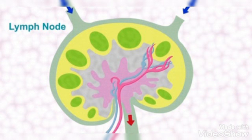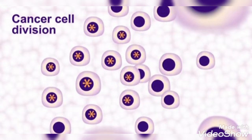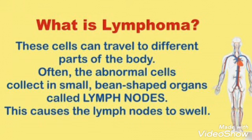These germ-fighting cells or lymphocytes get activated during the time of infection. But in infections like HIV or Epstein-Barr virus, or in the case of hereditary lymphoma when there is a history of lymphoma, the lymphocytes become abnormal and grow out of control. There is continuous cancer cell division and proliferation that doesn't get stopped.